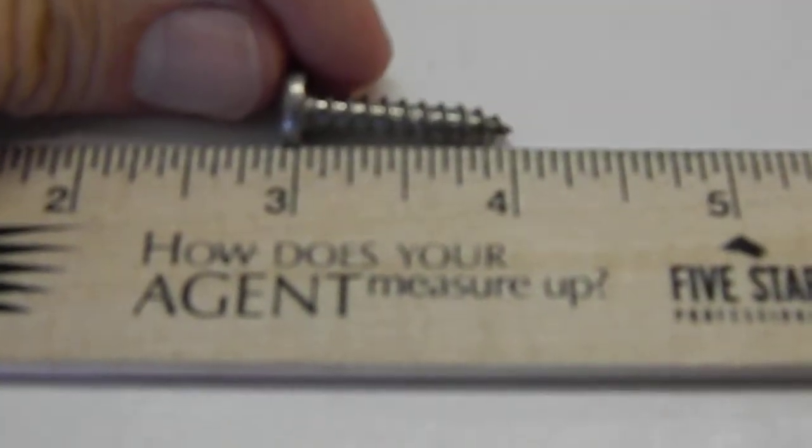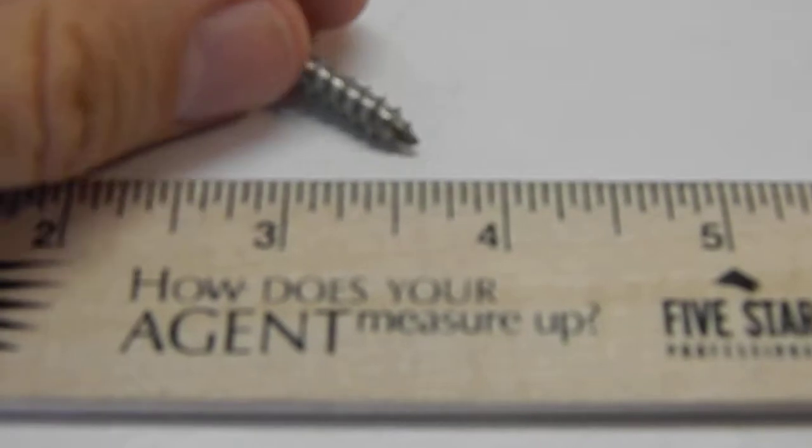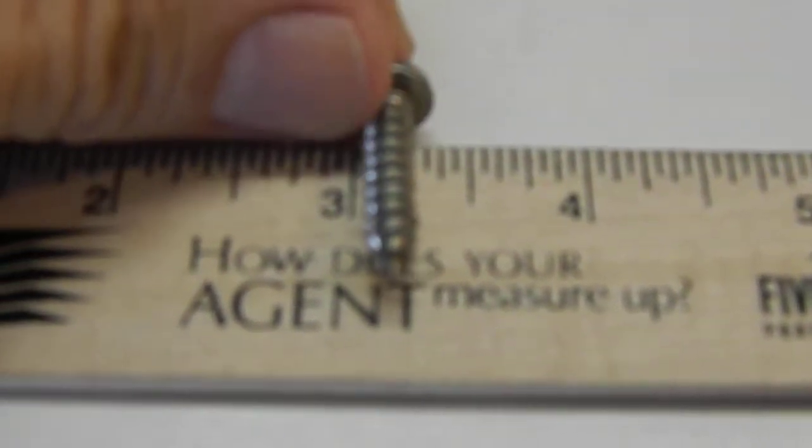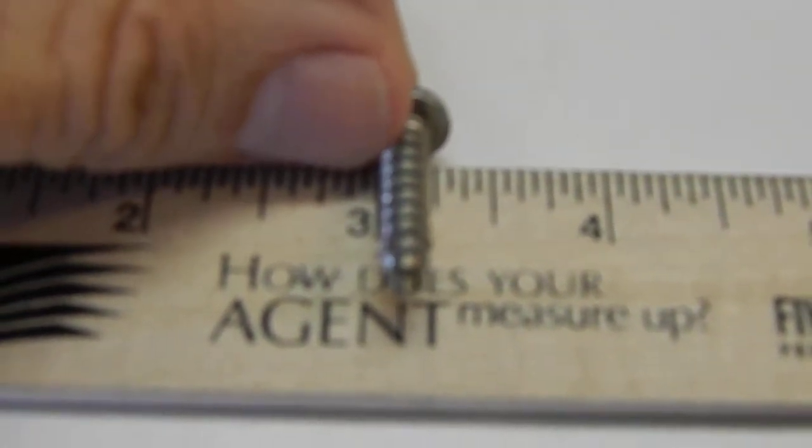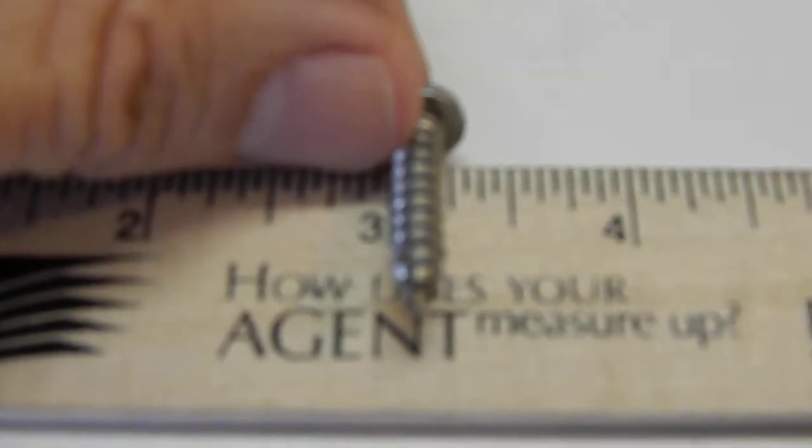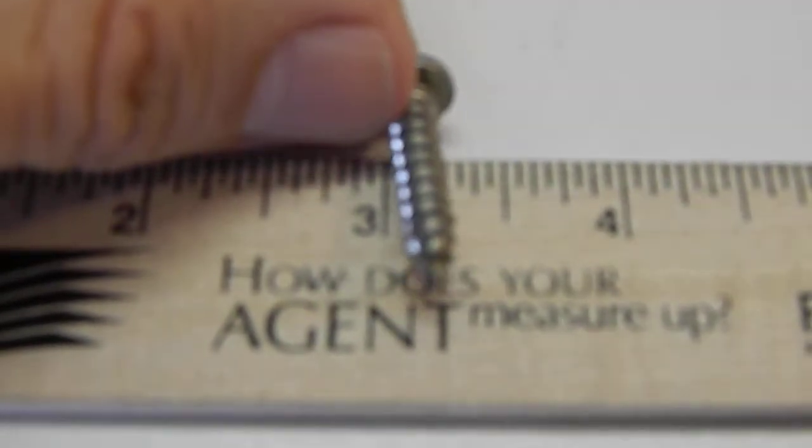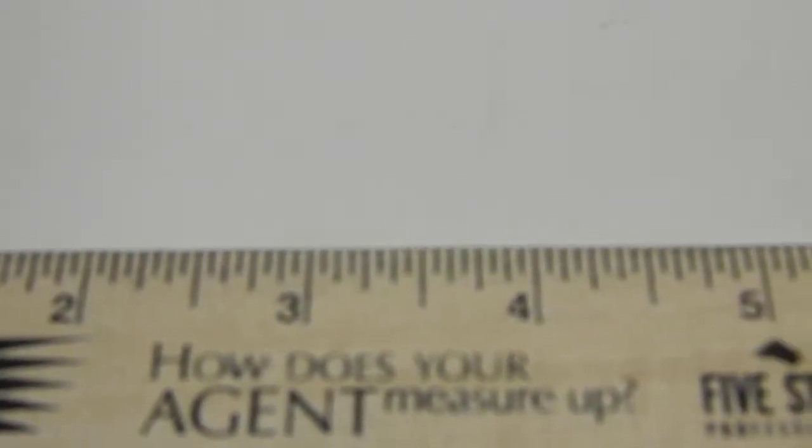Here's one. This screw is an inch long. Let's see what the diameter is. That one's closer to three sixteenths inch diameter. Not a big difference, but it's enough to make the screw not fit right if you get the wrong one. I would say that's a number 12 sheet metal screw.